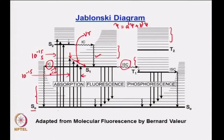We started with the Jablonski diagram because we are talking about fluorescence. In the Jablonski diagram you have these different excited state processes. VR corresponds to vibrational relaxation, then ISC corresponds to intersystem crossing. If you have radiative de-excitation from your triplet state to your singlet state, then it is phosphorescence. If it is from singlet excited state to the singlet ground state radiatively, then it is fluorescence, and you also have a host of non-radiative processes.